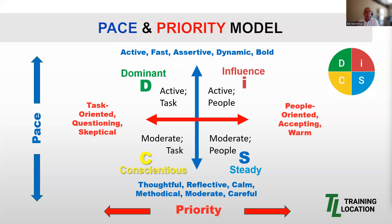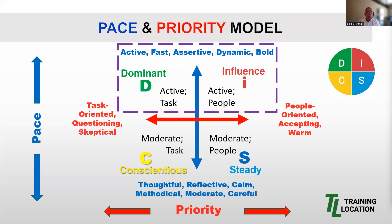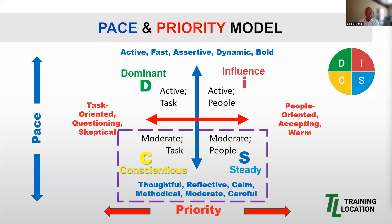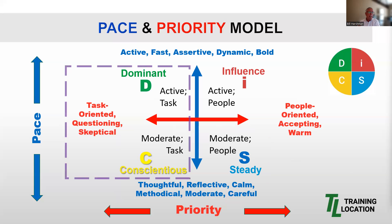This simple model helps to point out which styles share either pace or priority with another style. For example, the D and the I each share a spot somewhere on the top half of that pace continuum. The I and the S each have their spot somewhere on the right half of the priority continuum. The C and the S have a spot somewhere on the bottom half of the pace continuum. And the C and the D each have a spot somewhere on the left half of the priority continuum.